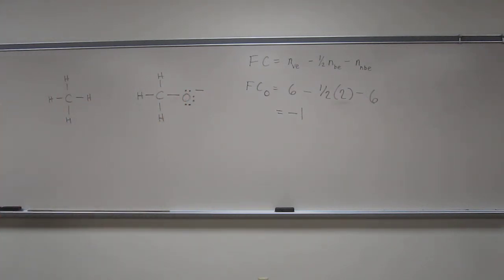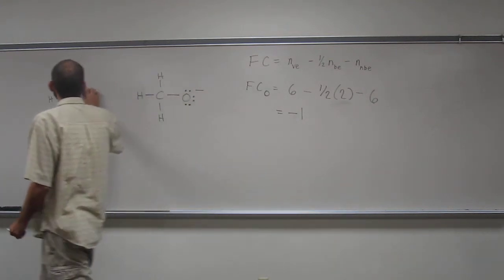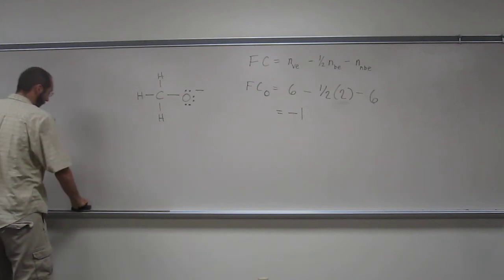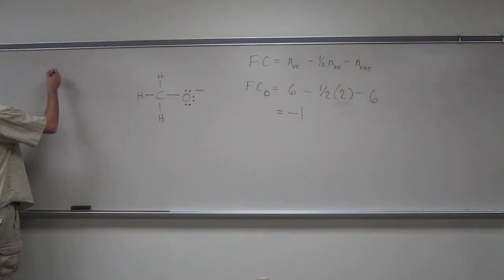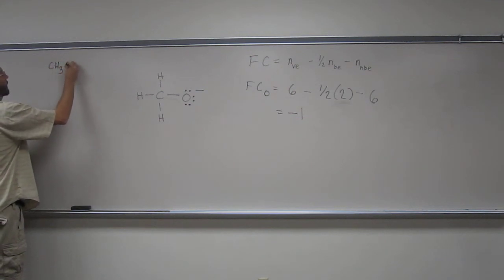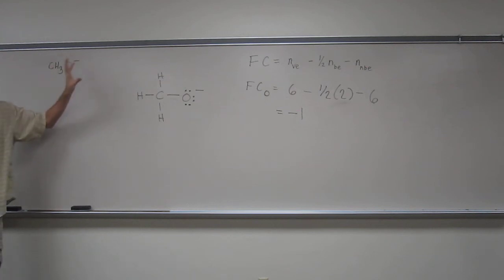So in this case, and in all of these cases now, you should be able to look at some sort of polyatomic formula for a polyatomic ion, like this one, and figure out where that charge resides, which atom that charge would reside on.